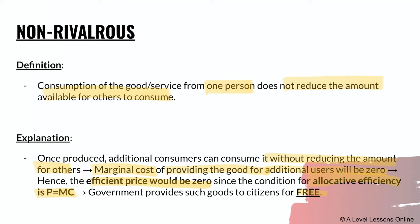Since the marginal cost of an additional user is zero, the efficient price is also zero. The government therefore provides these goods and services for free, absorbing the cost required — which is why street lamps and fireworks are typically sponsored or paid for by the government. The additional cost of producing a street light for an additional person is zero, so the government simply provides these services and goods for free.